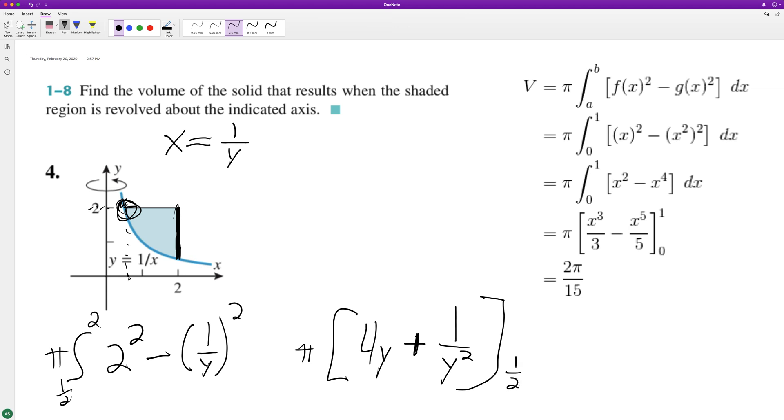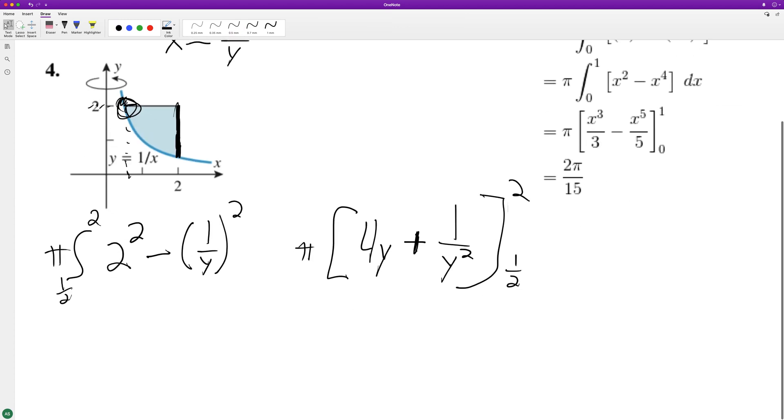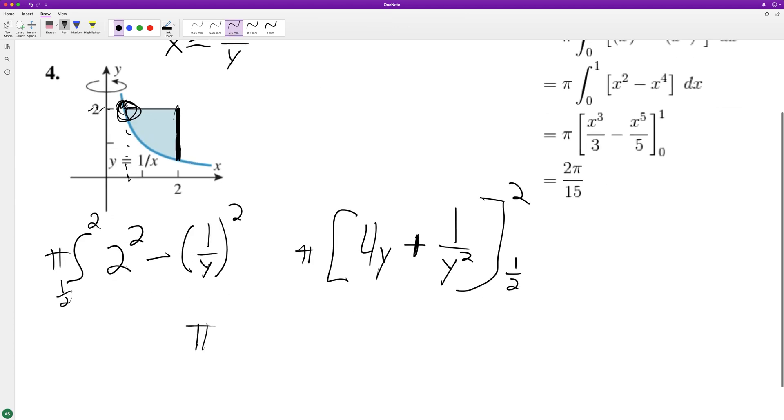And we're going from one half to two. Okay, so go ahead and solve this. So pi, and then for two we get eight plus one over four, minus one half times four is two, plus two.